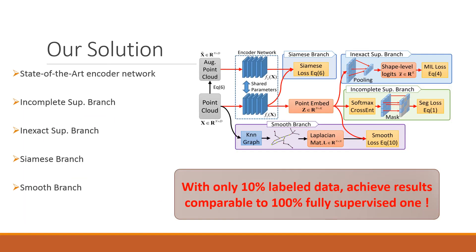For these objectives, we proposed a network with four branches to give constraints to unlabeled points. And finally, we achieved a surprisingly good result. With only 10% labeled data, we achieved results almost as good as a 100% fully supervised one.